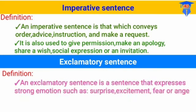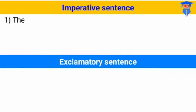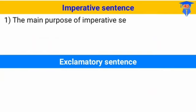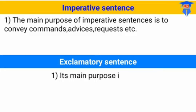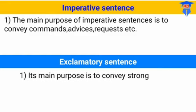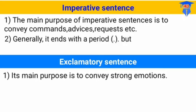For exclamatory sentence, it is a sentence that expresses strong emotion — for example, excitement, surprise, or any other strong feeling. The main purpose of imperative sentence is to convey commands, advice, and requests — yaitu menyampaikan kalimat perintah, saran, ataupun permintaan. For exclamatory sentence, the main purpose is to convey strong emotion — untuk menyampaikan emosi, for example surprise.